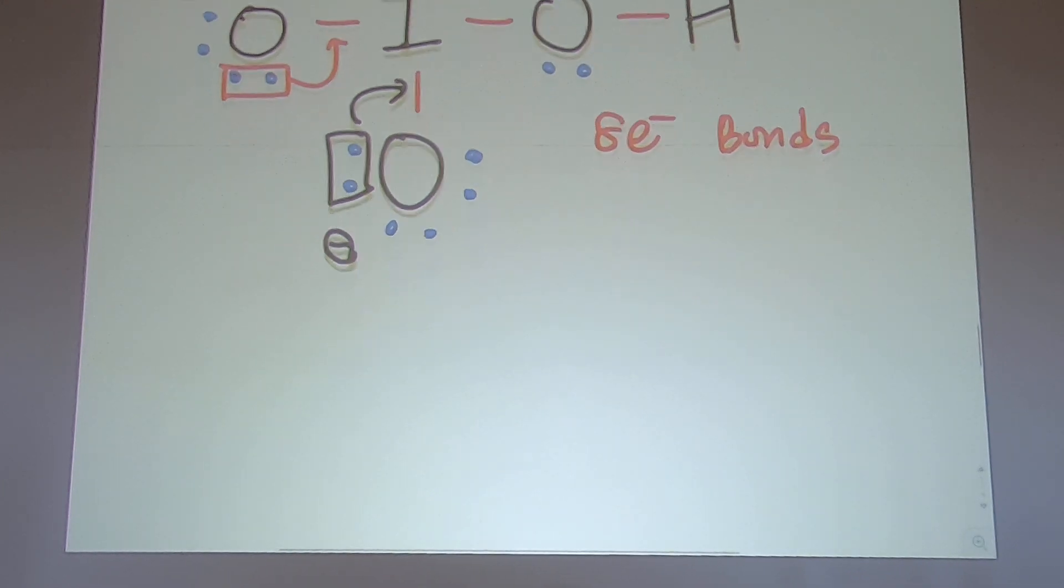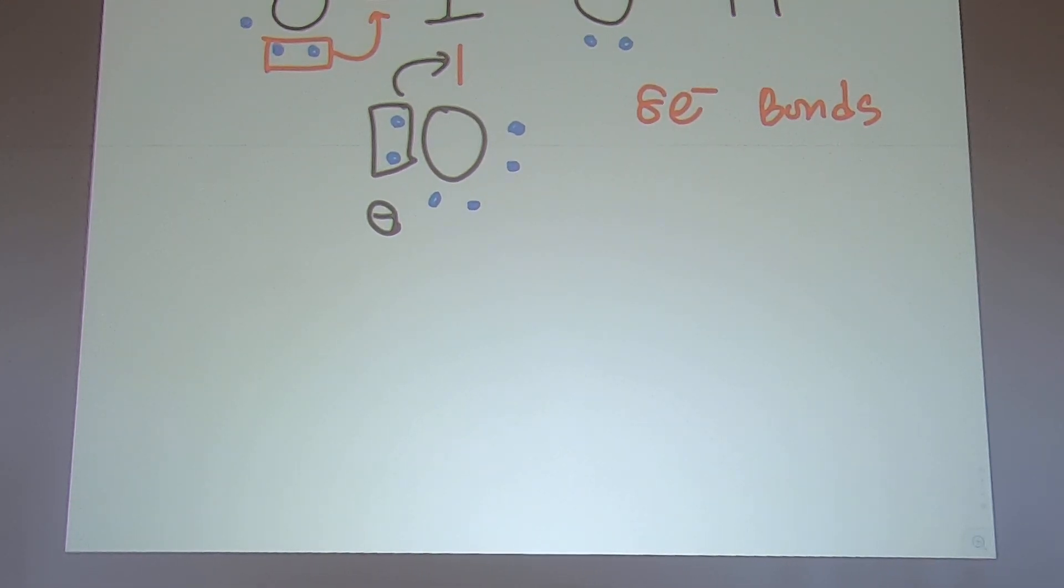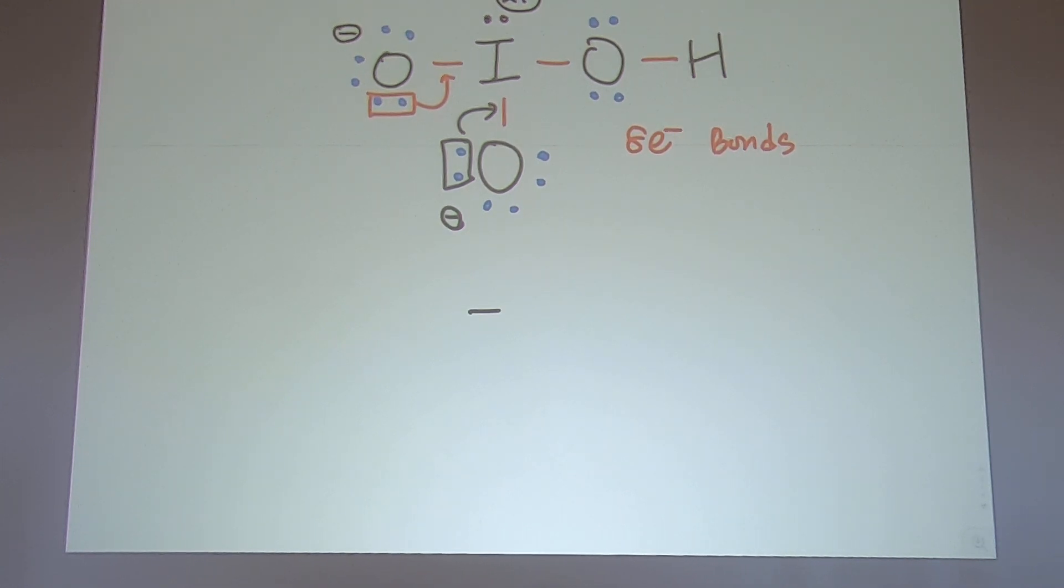So what's your final answer? Iodine in the middle. Oxygen. They form double bond, double bond, single bond. Two pairs. And then that's the final. Because this one wants to change it into this. This is your final Lewis structure.